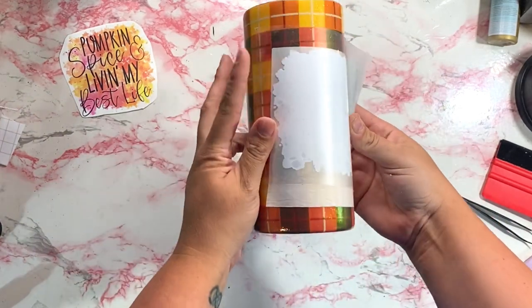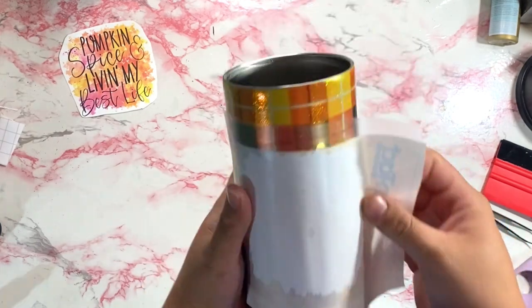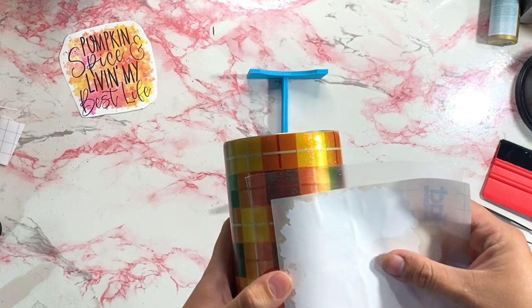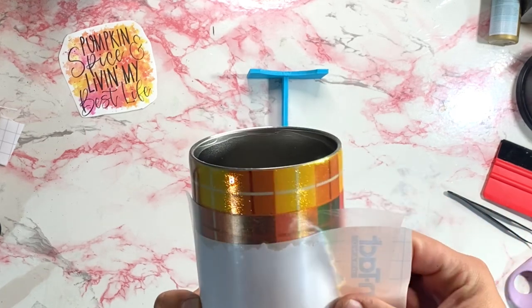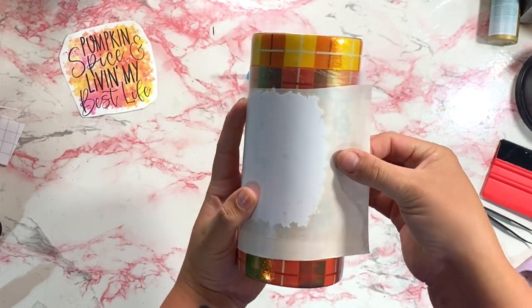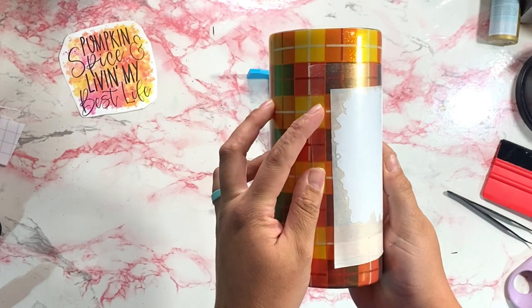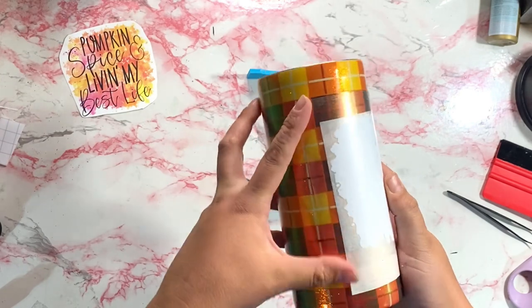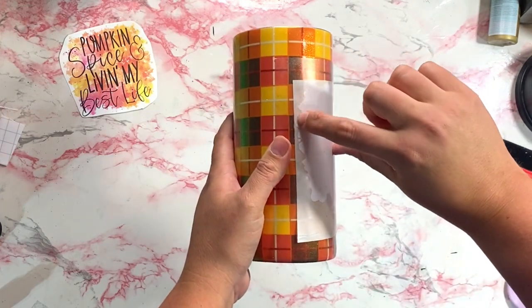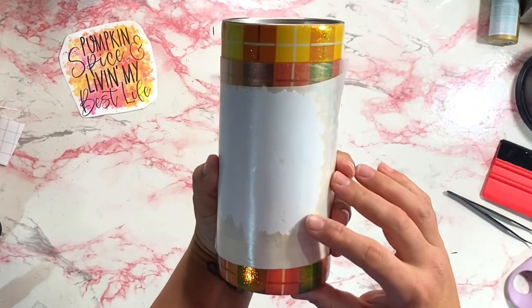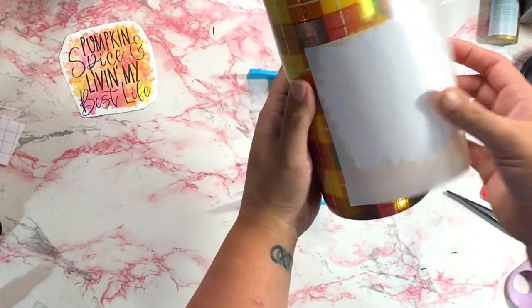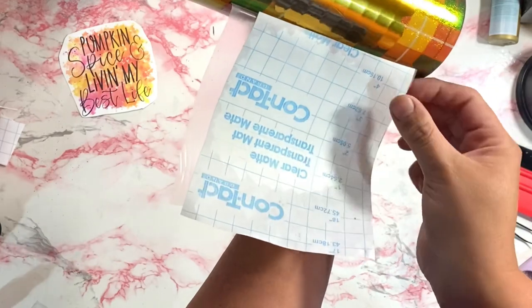This might take some readjusting, reshifting to get it to be 100% centered on that back layer. This is why I love the hinge method so much. Once you have it centered, you're going to make sure that extra is on your tumbler well, and you're going to hold it with one hand before you remove the backing. So then you can just fold it right over and it stays in the correct spot.